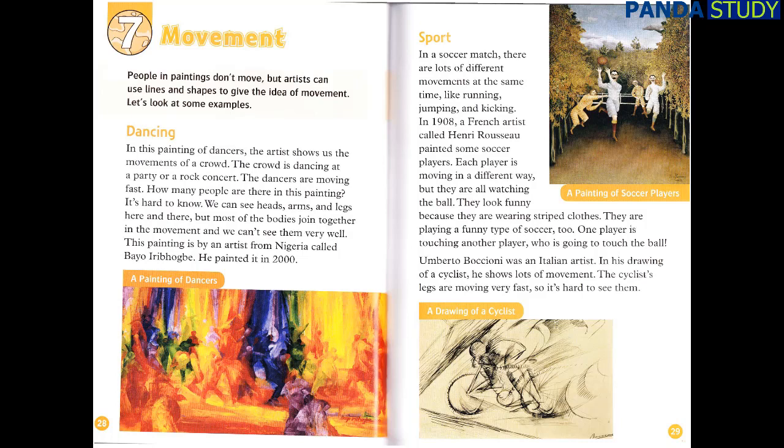People in paintings don't move, but artists can use lines and shapes to give the idea of movement. In this painting of dancers, the artist shows us the movements of a crowd. The crowd is dancing at a party or a rock concert — the dancers are moving fast. How many people are there in this painting? It's hard to know. We can see heads, arms and legs here and there, but most of the bodies join together in the movement. This painting is by an artist from Nigeria called Bayo Iriuk Bogbe, painted in 2000.